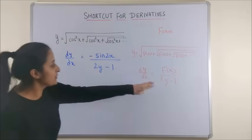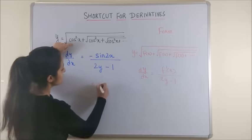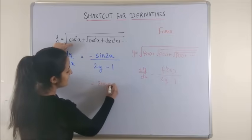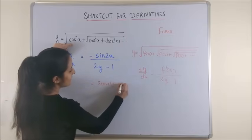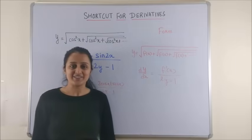So if you compare it with this, the derivative of cos square x would be 2 cos x into minus sin x upon 2y minus 1 as it is. And that's precisely your answer.